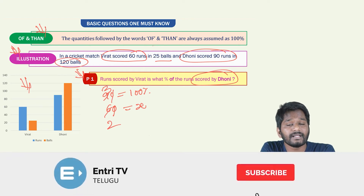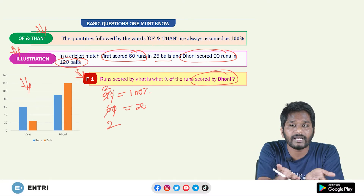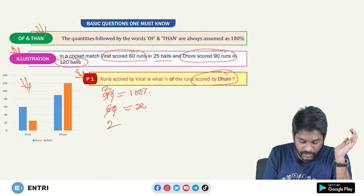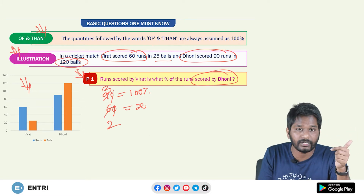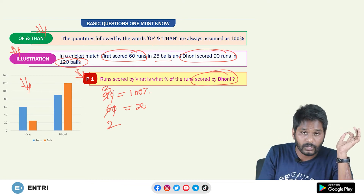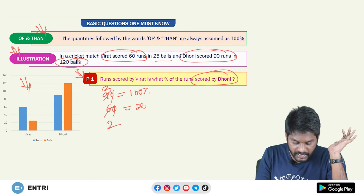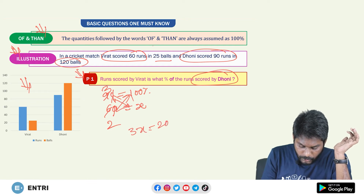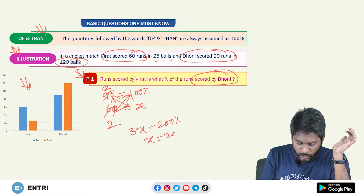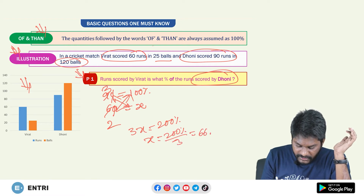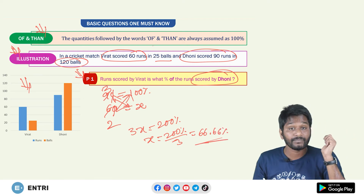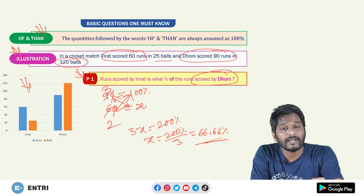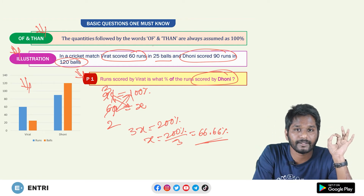Cancel 0 with 0 — that gives us 3 and 2. So 3x equals 2 into 100, which is 200%. Therefore x equals 200/3, which is equal to 66.66%. So this is the answer: Virat's score is 66.66% of Dhoni's score.